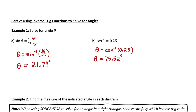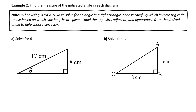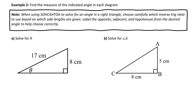Now that you have a general understanding of how we can use inverse trig functions — inverse sine and inverse cosine — by inputting a ratio of sides and outputting an angle, let's move on to more complicated questions. Based on what sides are given in a right angle triangle, we'll need to choose which primary trig ratio to use to find the missing angle. Label the opposite, adjacent, and hypotenuse from the desired angle to help you choose correctly.